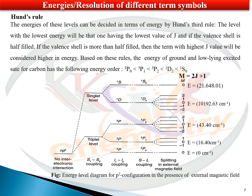Now the question is: how do we arrange all these term symbols in order of energy? By Hund's rule, if a subshell is less than half-filled, we choose the term symbol with the lowest value of J as the ground state. For p² (less than half-filled), we choose the term symbol with the lowest J — that is 3P0. The energy increases going from 3P0 through 3P1, 3P2, up to 1S0.